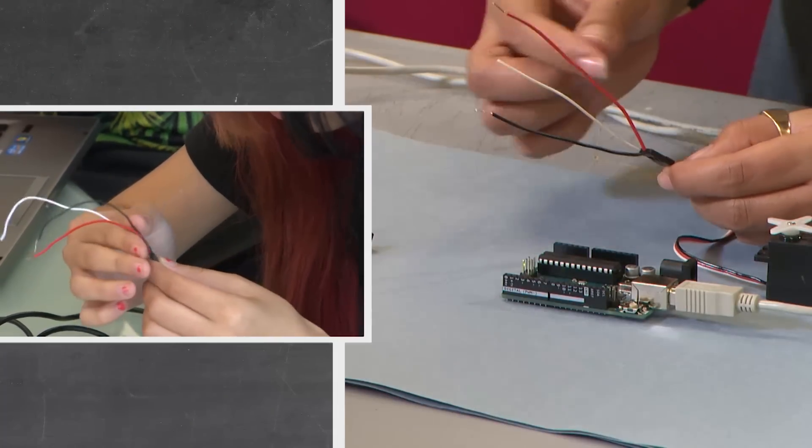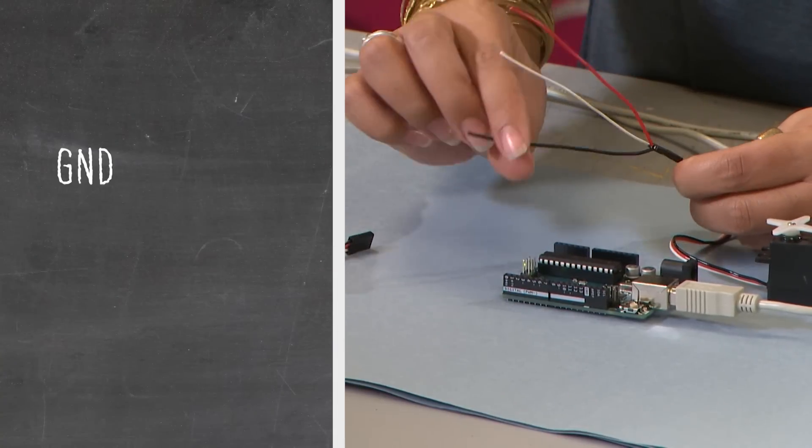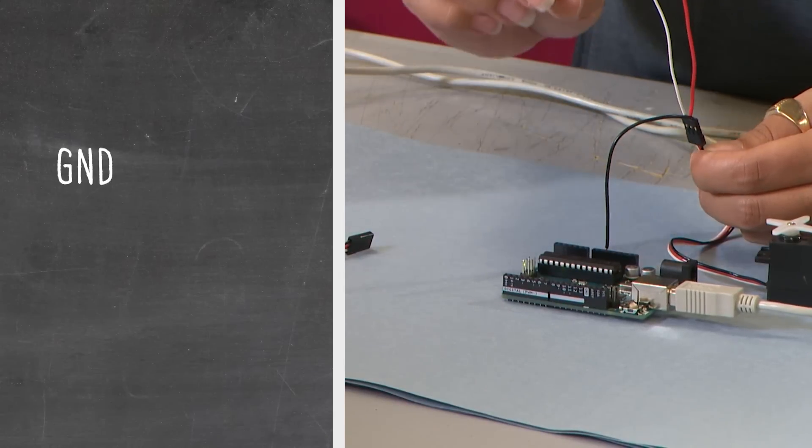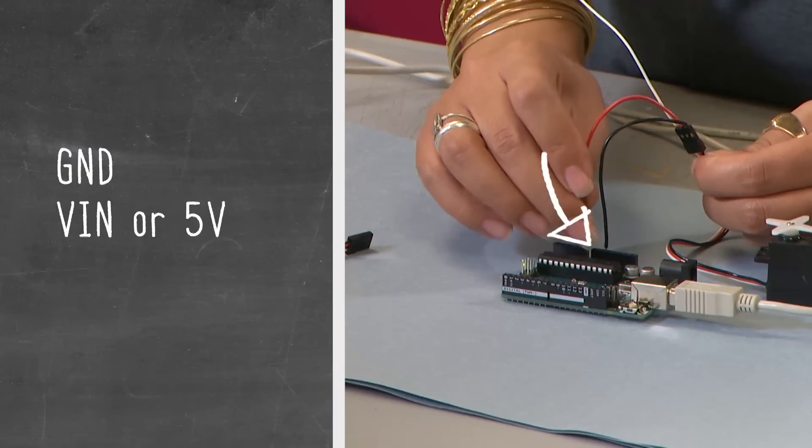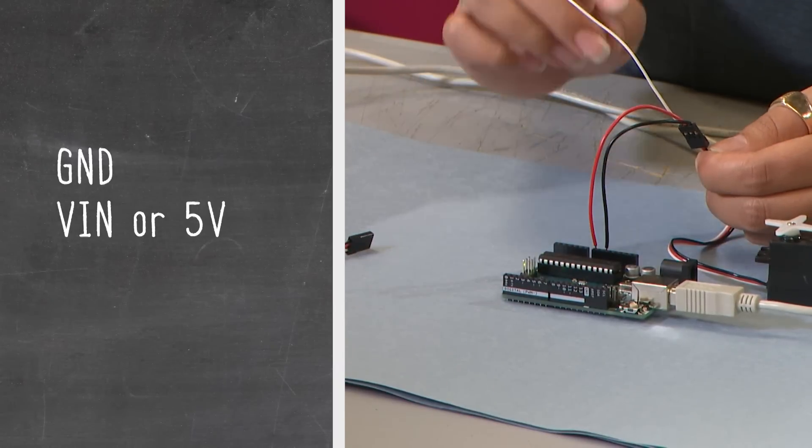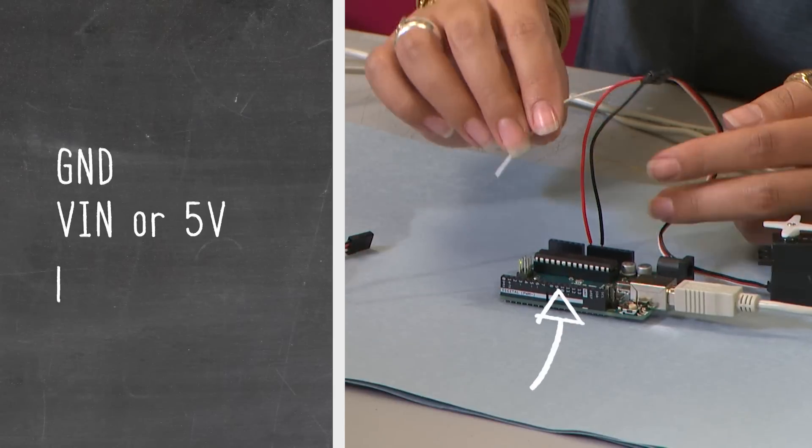Again, black and red are your power. Black is going to go to GND, the negative side of power. Red can go into VIN, although some people like to use 5V. White is where you programmed it in your void setup, which was pin 9.